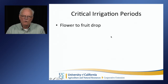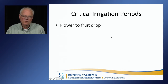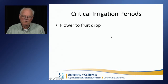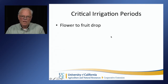There are also critical periods when water stress will be more problematic. For most subtropicals, the period from flower to fruit drop is the most critical — if stress occurs then, there will be more significant fruit drop. Dave Goldhammer's work on navel orange found that you can compensate by ensuring full irrigation requirement in the fall, which can make up for a spring stress. There are certain differences among the different subtropicals.